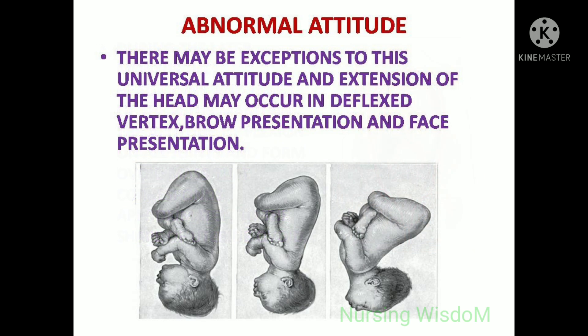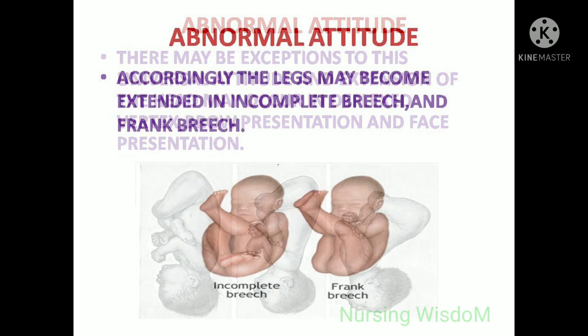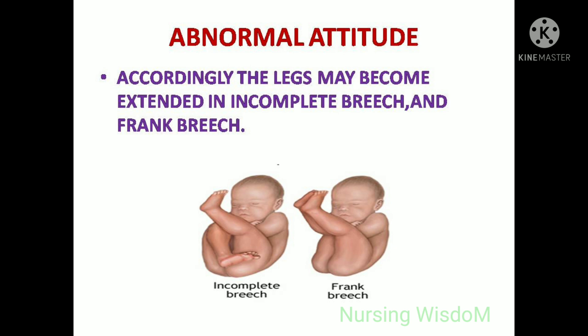Abnormal attitude: there may be exceptions to this universal attitude, and extension of the head may occur in deflexed vertex, brow presentation, and face presentation. Accordingly, the legs may become extended in incomplete breech and frank breech.